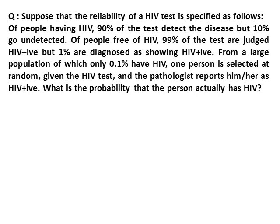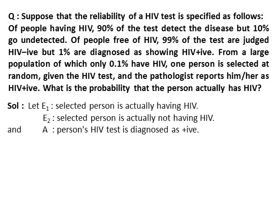One person selected at random has been given an HIV test, and the pathologist reports that he is HIV positive. What is the probability that the person actually has HIV? Let E1 be the event that the selected person is actually having HIV, and E2 be the event that the selected person is actually not having HIV. Here, E1 and E2 are complements of each other. Let A be the event that the person's HIV test is diagnosed as positive.